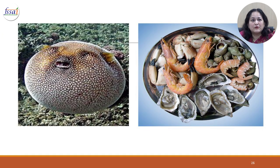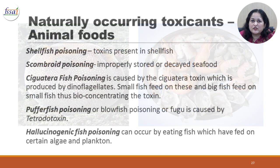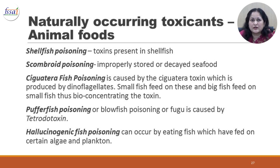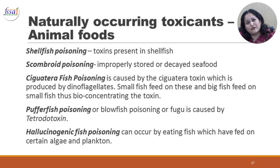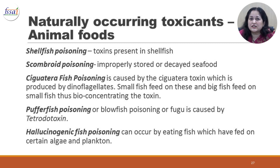There are naturally occurring toxicants in animal foods as well. Shellfish poisoning can result from toxins present in shellfish. Scombroid poisoning is caused by improperly stored or decayed seafood. Ciguatera fish poisoning is caused by the ciguatera toxin produced by dinoflagellates — small fish feed on these and large fish feed on small fish, thus bioconcentrating the toxin. Puffer fish poisoning is caused by tetrodotoxin and can even lead to death. Hallucinogenic fish poisoning can occur from eating fish that has fed on certain algae and plankton.